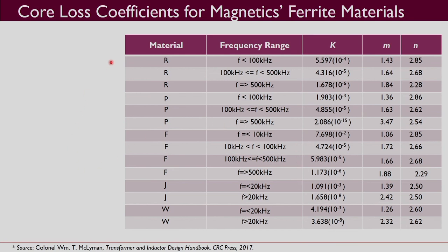When discussing core loss calculations, the core loss per unit volume is given as Pv = k · f^m · Bm^n, where k, m, and n are empirical coefficients needed for core loss calculation. These data are provided by the manufacturer. For the ferrite materials by Magnetics, the frequency range and values of k, m, and n are all provided.